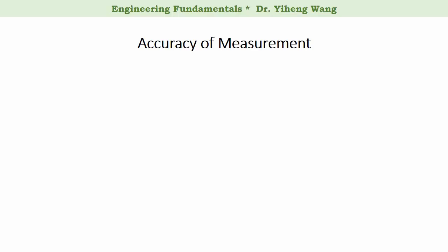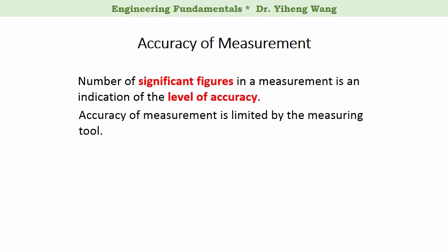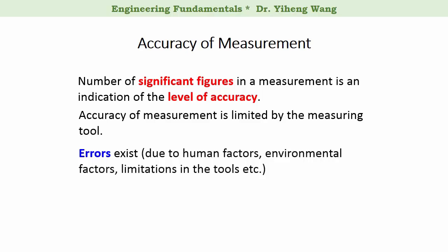We need to start the discussion with the accuracy of measurement, because the number of significant figures in a measurement is an indication of the level of accuracy. The level of accuracy of measurement is limited by the measuring tool we use, and although more advanced tools can provide more accurate measurement, errors always exist. There are many causes for error, such as human factors, environmental factors, or the limitations in the tools we use. Errors, however, are not mistakes. Unlike mistakes, errors are inevitable.